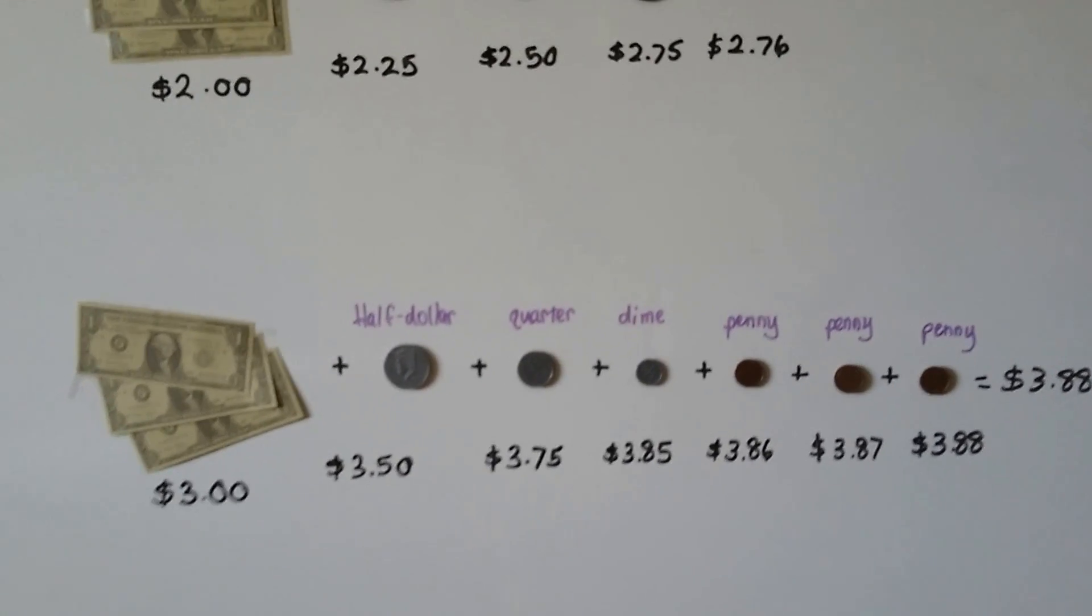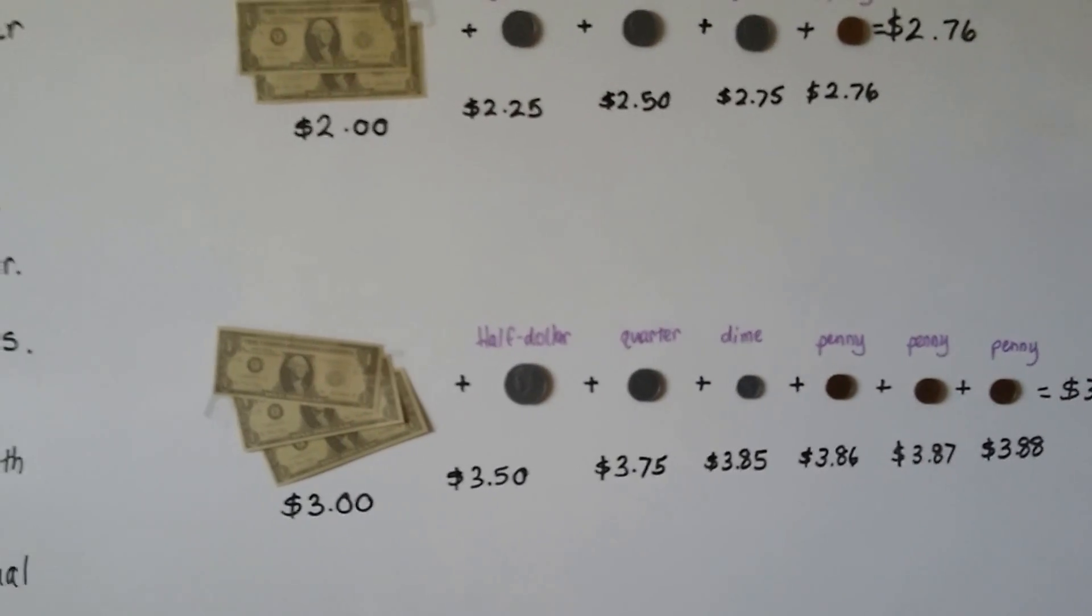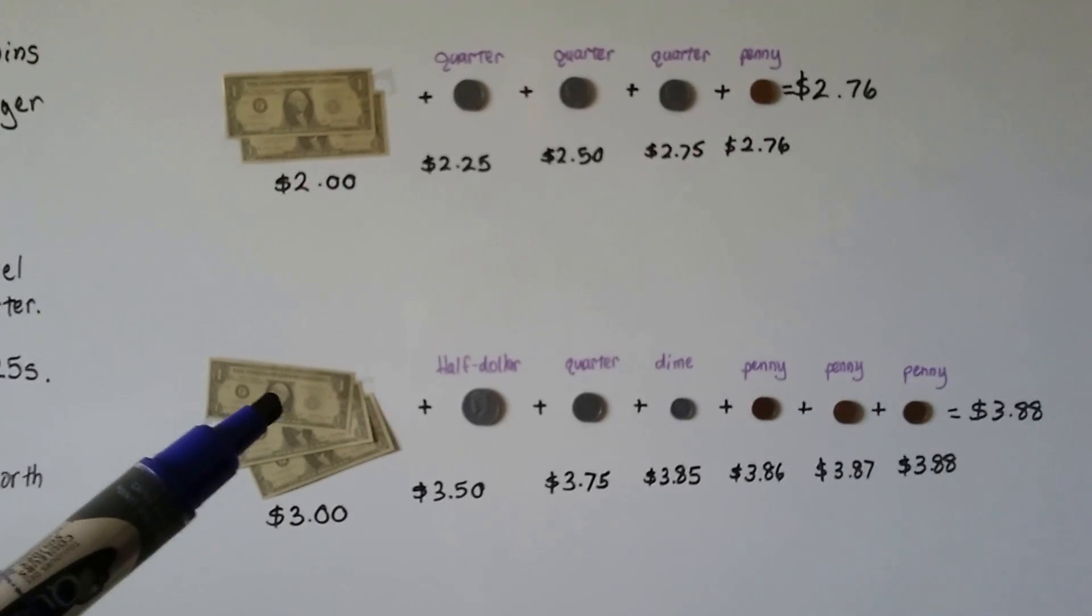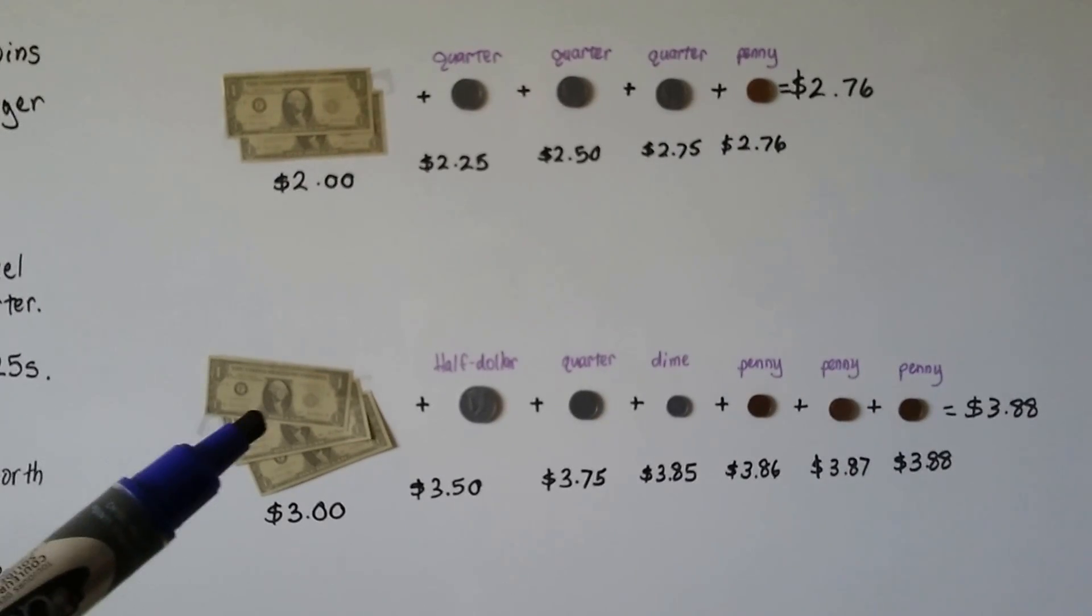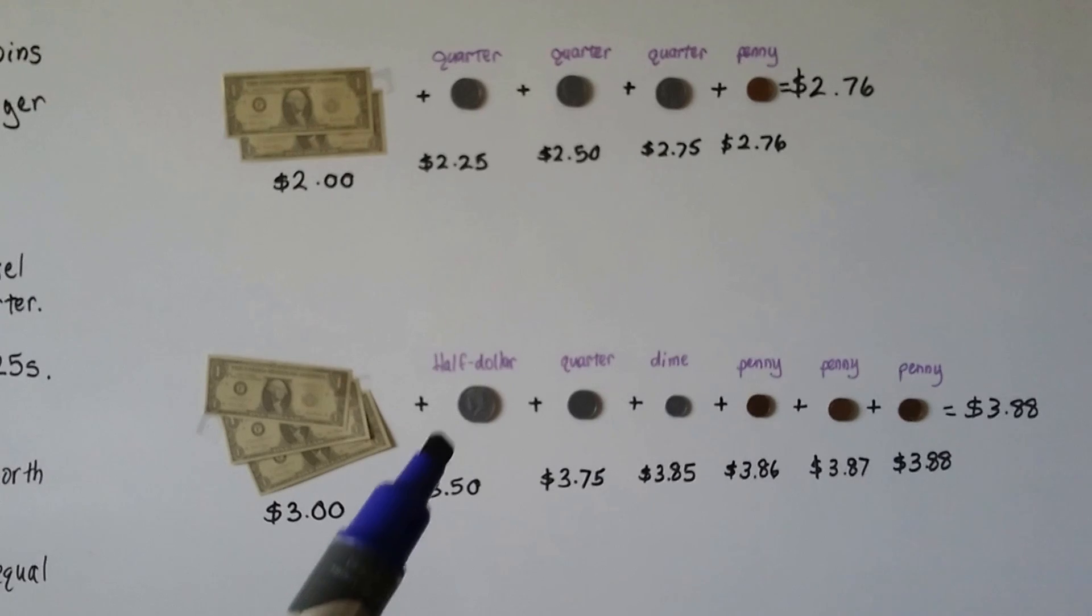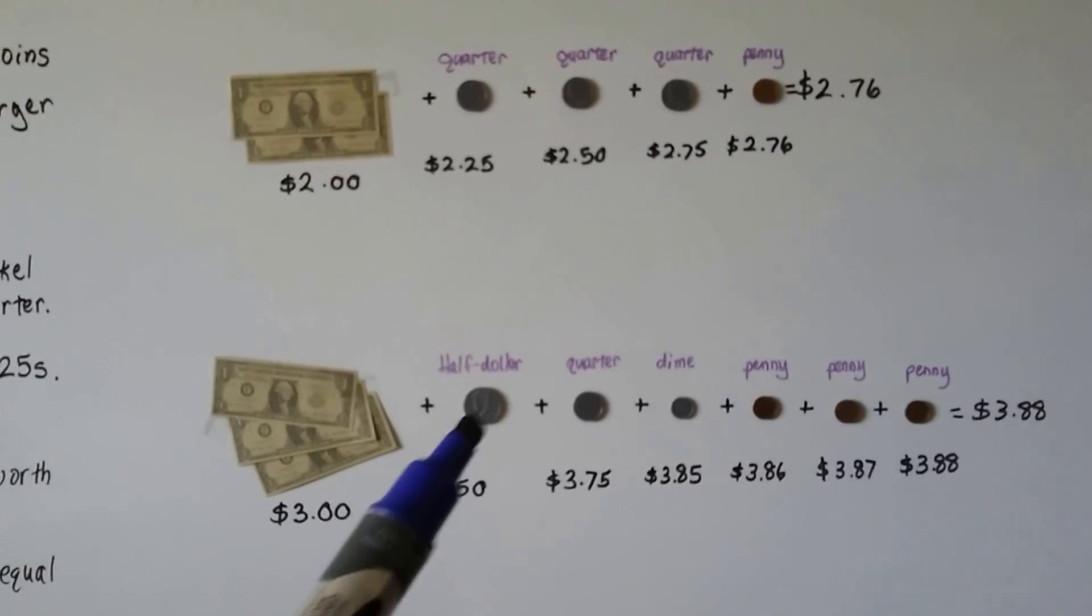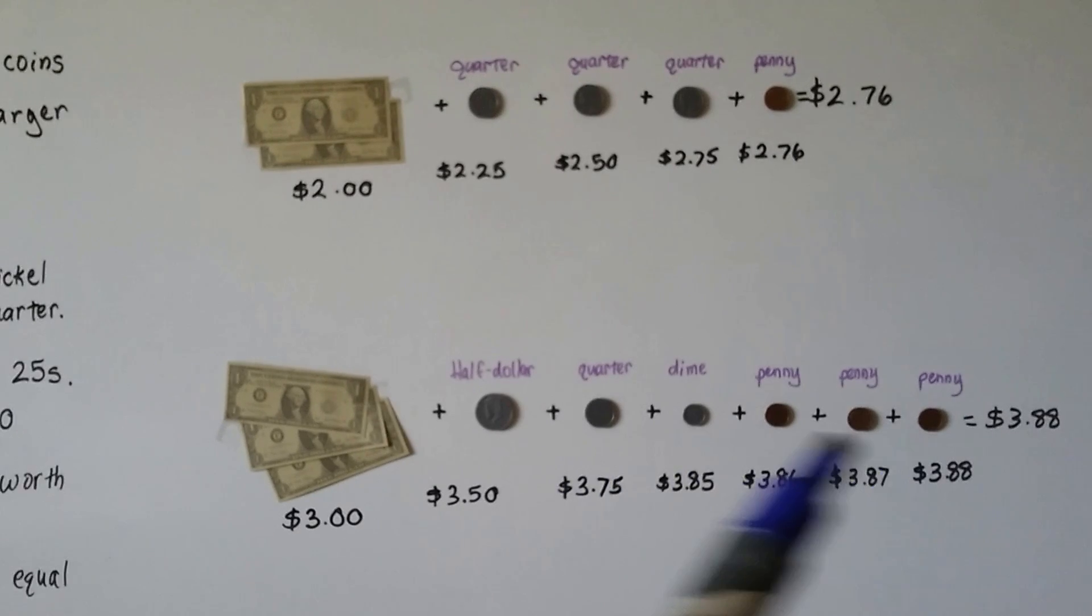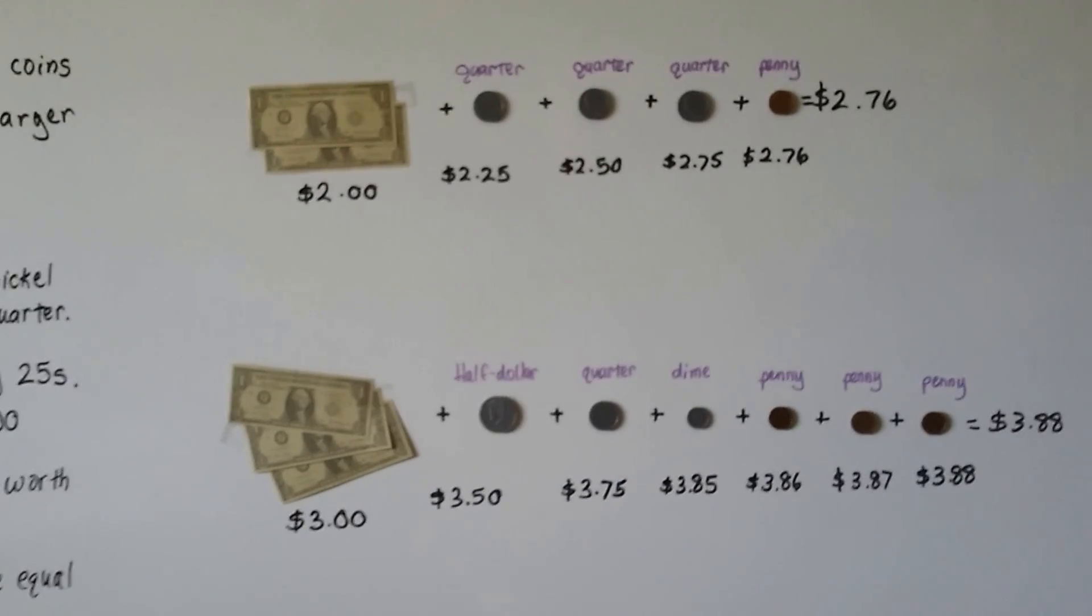If you've got some play money or you can get some paper and make some play money, you can just make some rectangles with ones or fives or tens on them for the different increments of bills. And you can get little square pieces even and write the values and pretend they're coins. They don't have to be round.